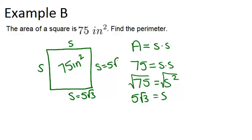So now if we want to find the perimeter, the perimeter is the distance around the whole shape. So we're just going to add up all 4 sides, which are all the same length. So all that we really need to do is 4 times 5 root 3,